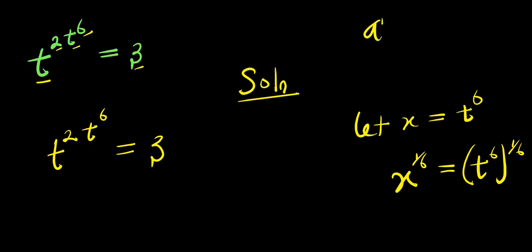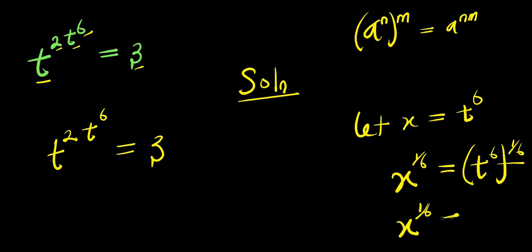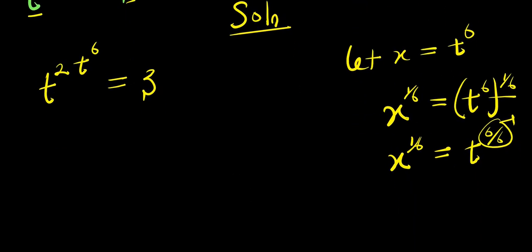Now if you have a to the power of n, raised to the power of m, that equals a to the power of n times m — so we multiply this out. We have x to the power of one over six equals t to the power of six times one over six, that is six divided by six, and six divided by six is one. So from here I have x to the power of one over six equals t.